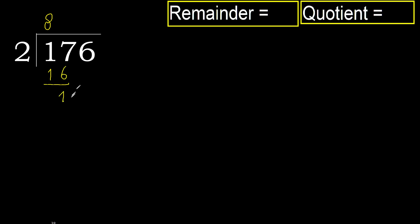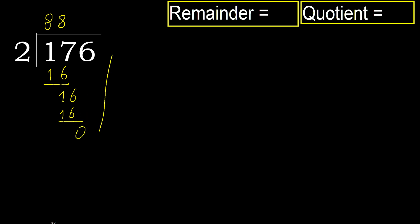Next: 16. 2 multiplied by 8 is 16 — 16 is not greater. Subtract 0. Next: there is no number, therefore finish.